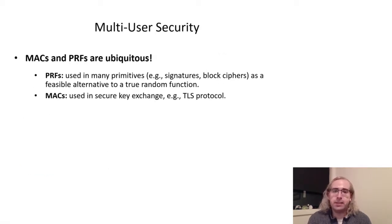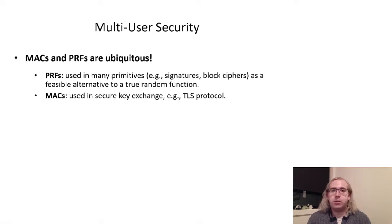Perhaps unsurprisingly, MACs and PRFs are some of the most ubiquitous and widely used cryptographic primitives in practice. PRFs are useful as a replacement for true random functions in many protocols, since true random functions are too expensive to instantiate. Meanwhile, MACs are useful in a great variety of protocols where authentication is needed, a notable example being the TLS protocol for authenticated key exchange.